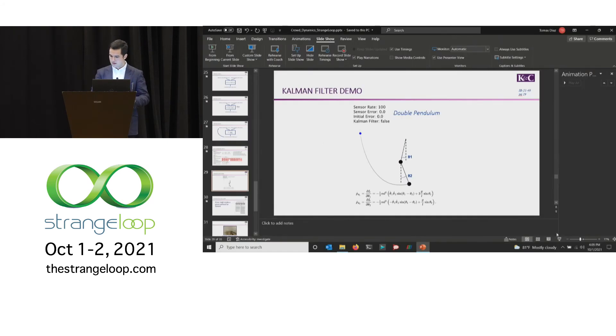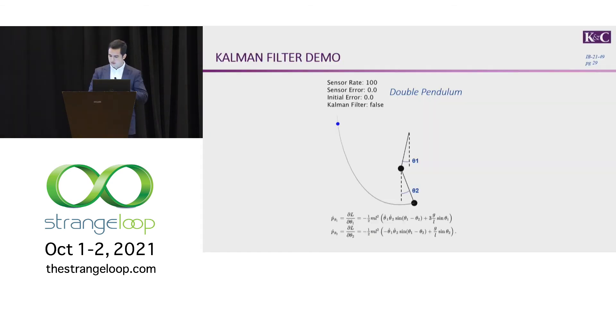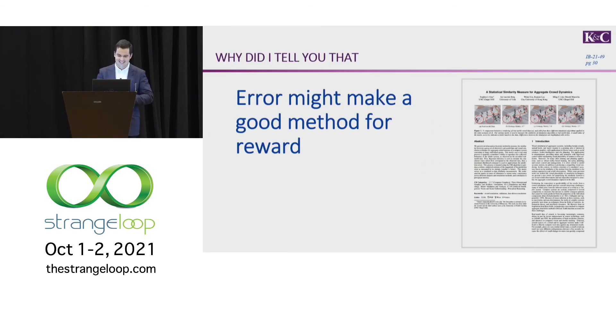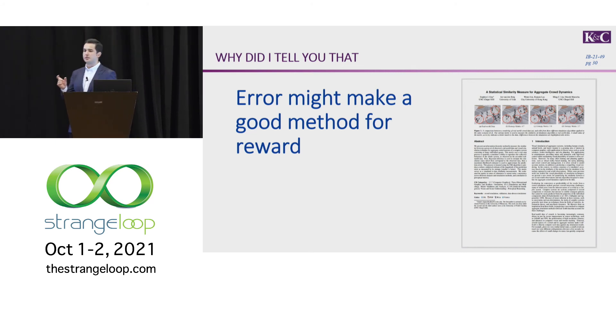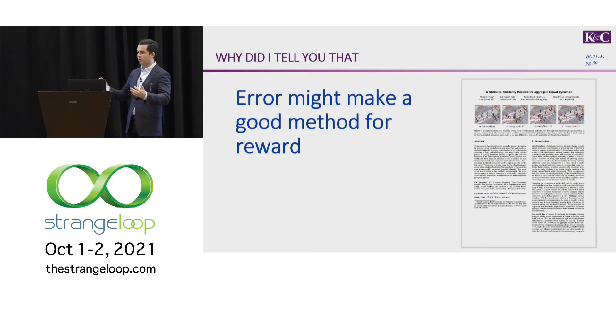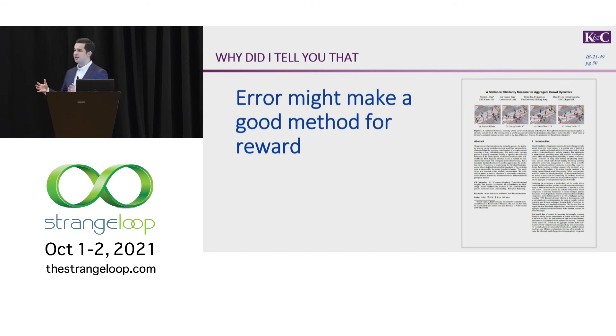So why did I tell you that? The Kalman gain, because it's trying to minimize the error between two source data, might actually make a really good method for calculating reward when you have data to use. This paper called Statistical Similarity Measure for Aggregate Crowd Dynamics was the first to push forward this idea of using the Kalman filter as a way to measure how well data and simulation match.